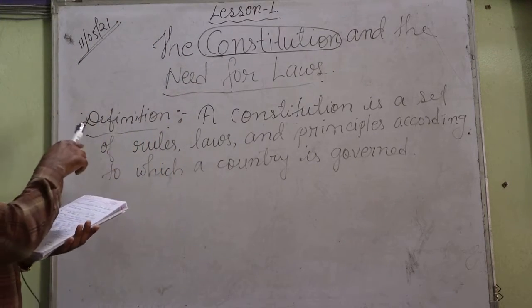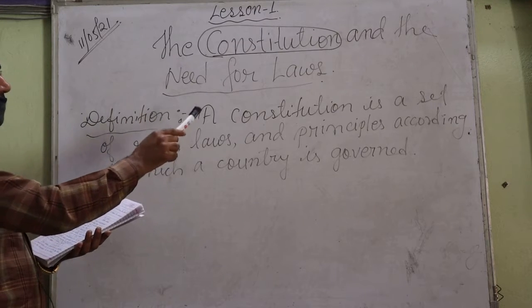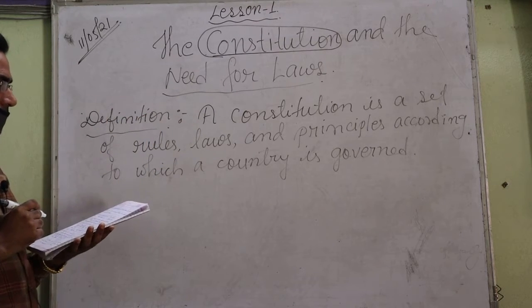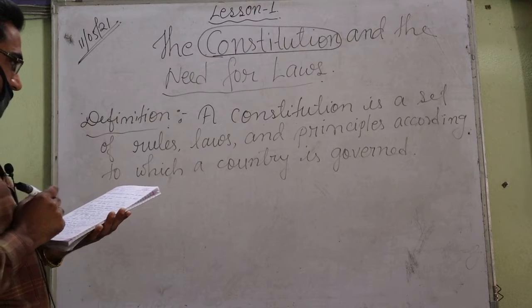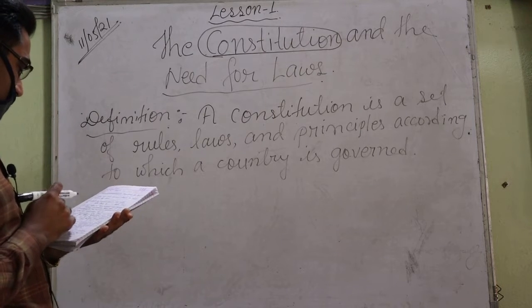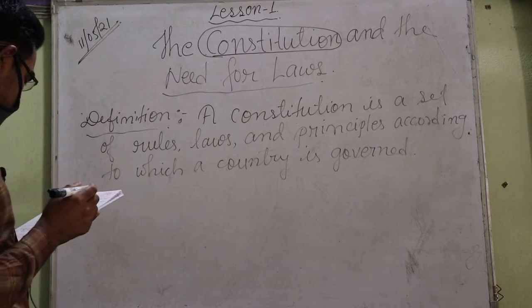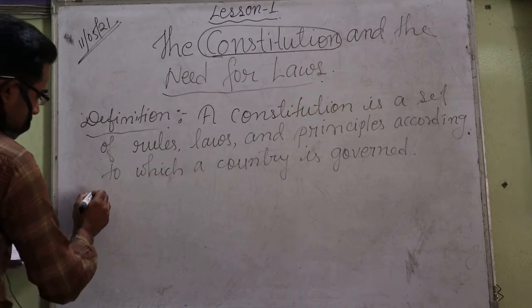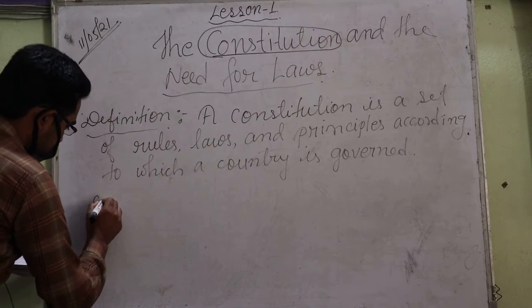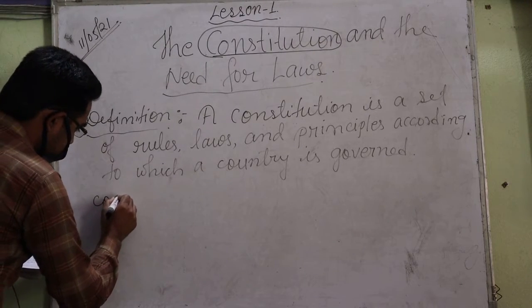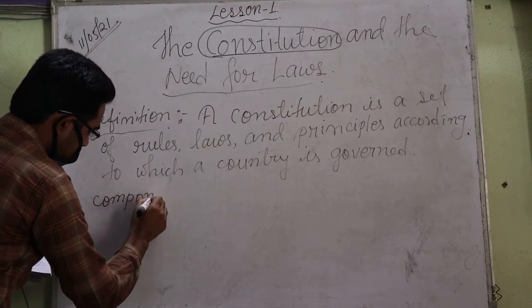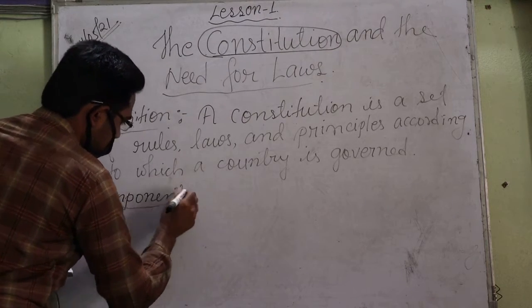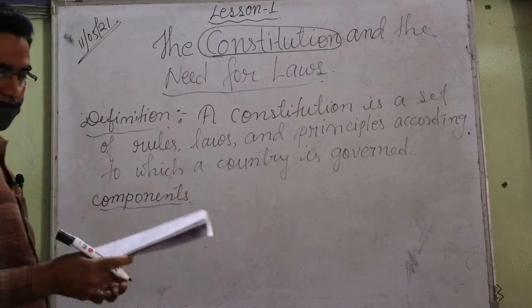So, a Constitution is a set of rules, laws, and principles according to which a country is governed. Now we will discuss its components.